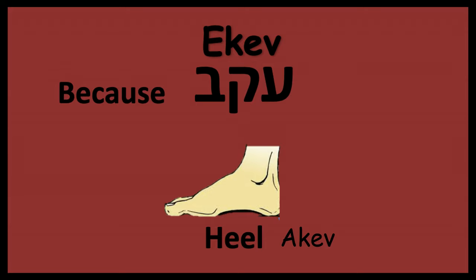Look at Genesis 25:26, referring to the birth of Jacob and Esau: 'And after that came his brother out, and his hand took hold on Esau's akev — his heel — and his name was called Yaakov.' So you have the word 'because' — ekev — the heel — akev — and if you put the letter yud in front of it, you get Yaakov or Jacob. The letter yud is a picture of a hand. Yaakov grabbed his heel with his hand, so he's known as the heel grabber.